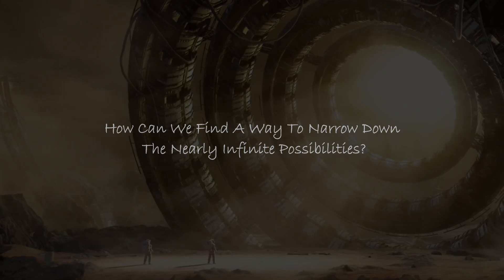To have any hope of finding intelligent alien life, we have to know exactly what to look for, whether it's dumb life or intelligent life. But where do we begin? How can we find a way to narrow down the nearly infinite possibilities?